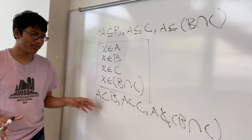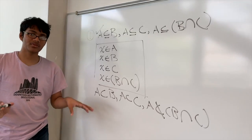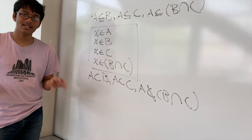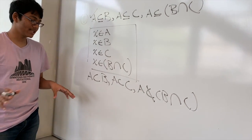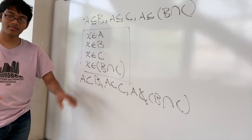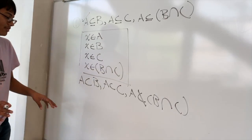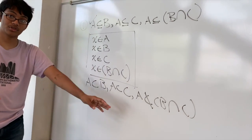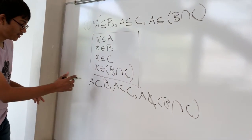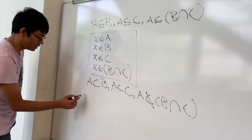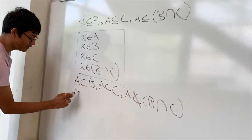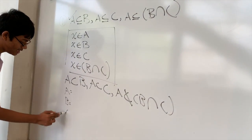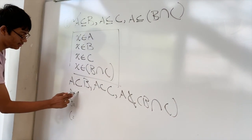So if you want to prove that a statement is wrong, in mathematics all you need is a good counterexample. So let me show you a counterexample. Let's say we have sets A, B, and C.